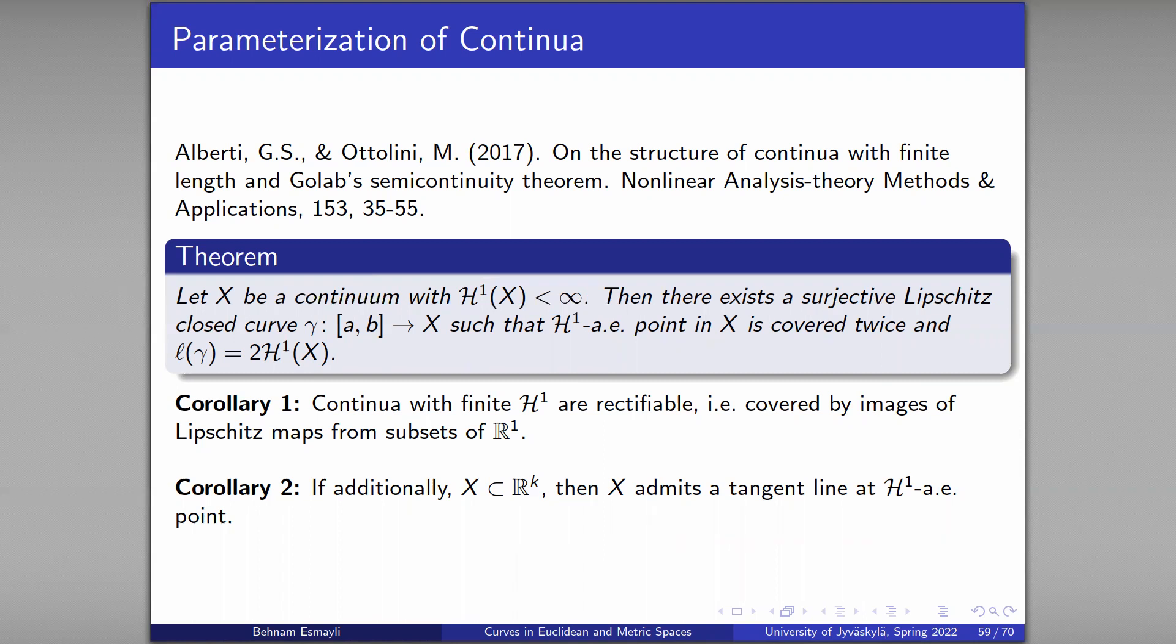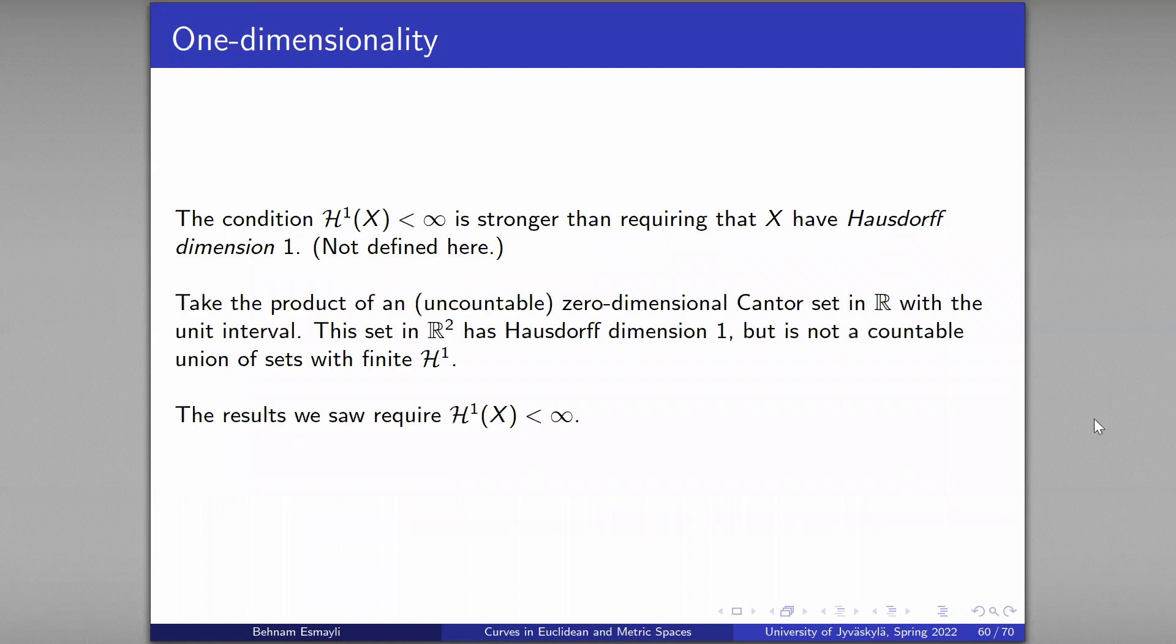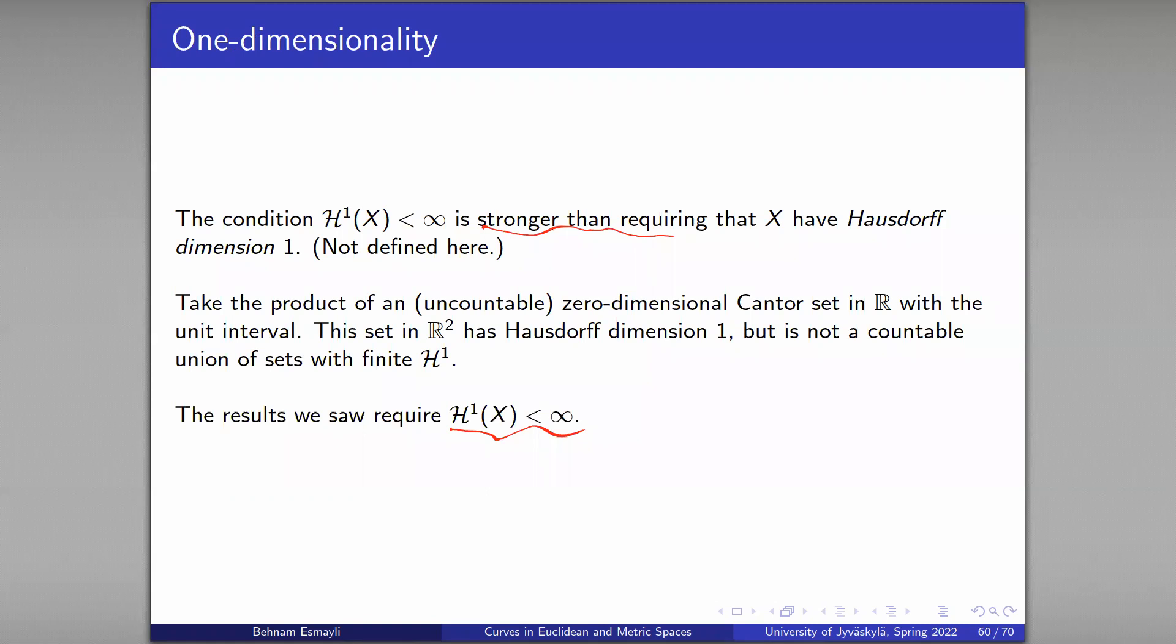That's the promised intrinsic characterization of curves: connected, compact, with finite H^1. And I want to finish with some clarification that these theorems hold for sets where H^1 is finite. And this is a stronger claim than saying that your set is Hausdorff one-dimensional. In the previous examples and theorems, the sets we have are one-dimensional. But being one-dimensional does not always imply this. And the counterexample is here. So you have a Cantor set, it's uncountable, but it has zero dimension, zero Hausdorff dimension, and then you multiply it by unit interval.